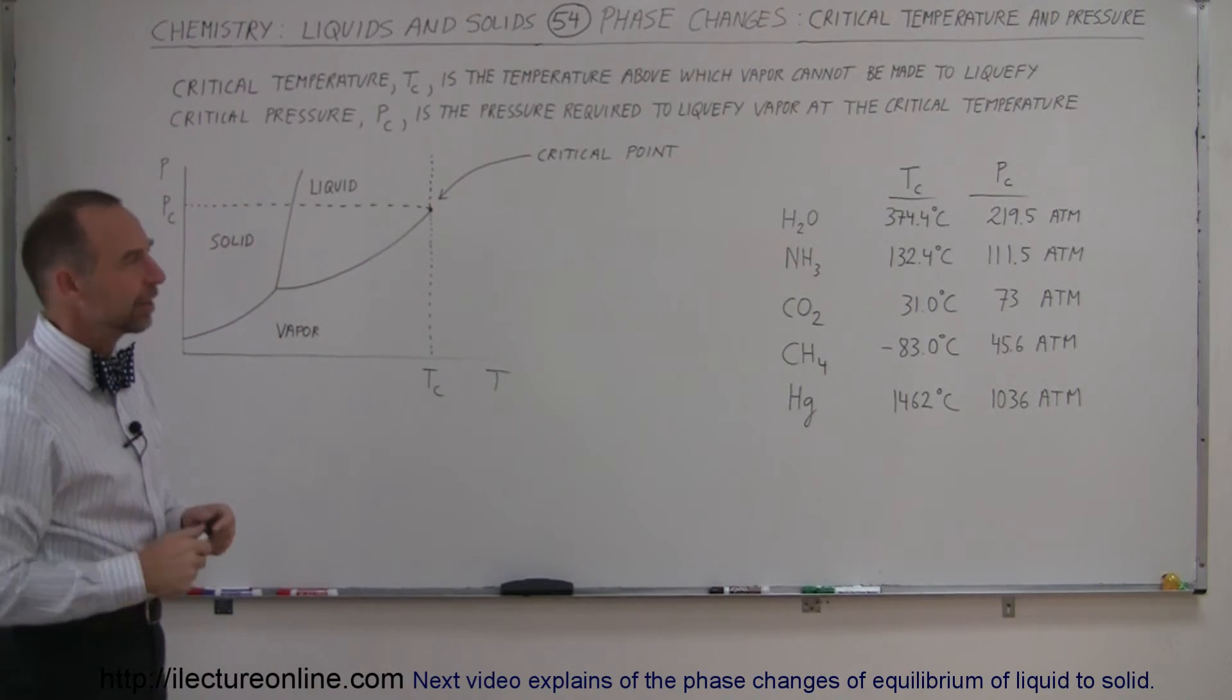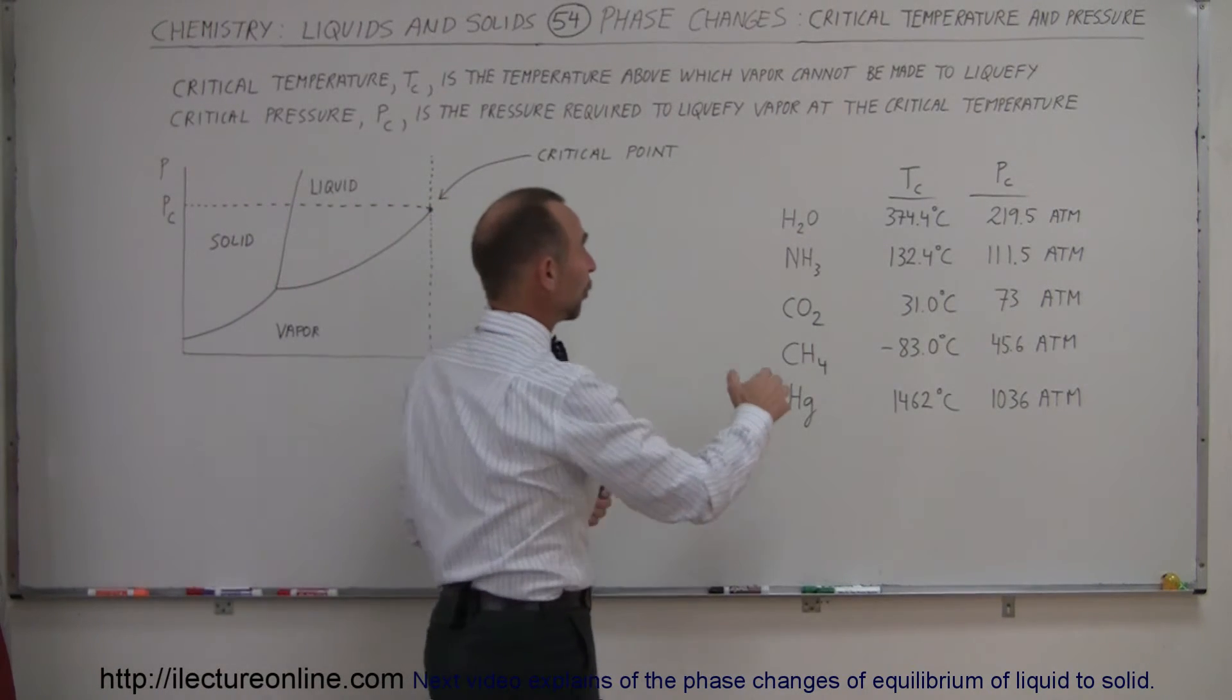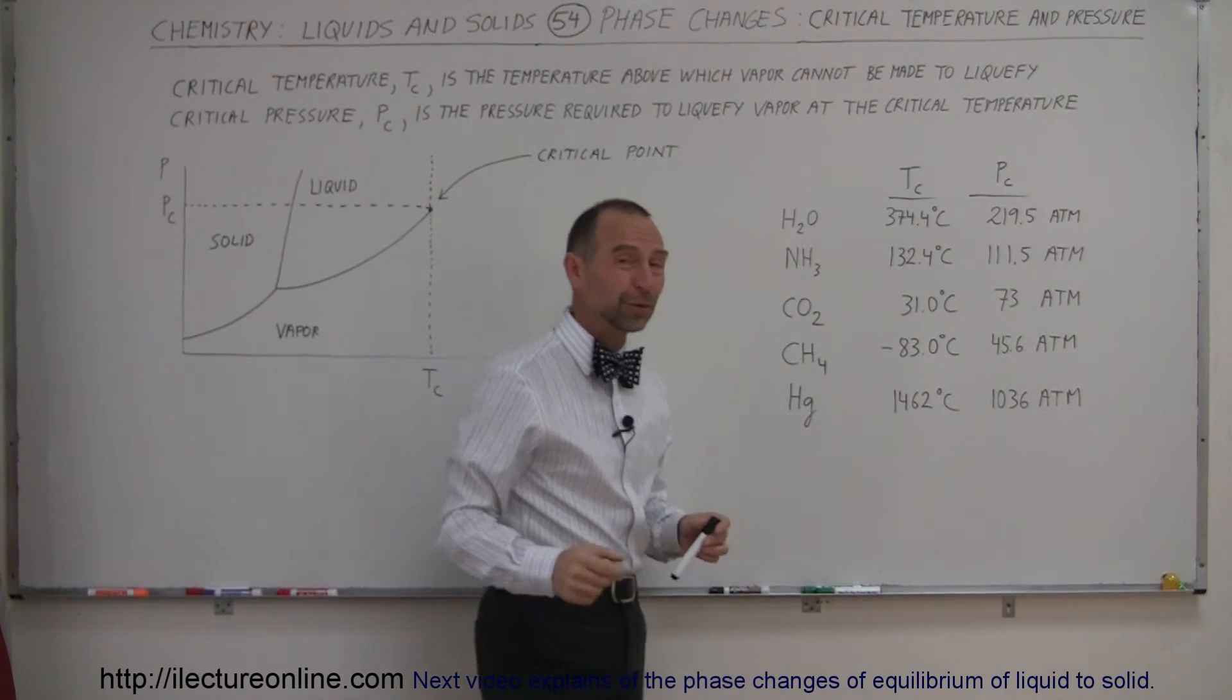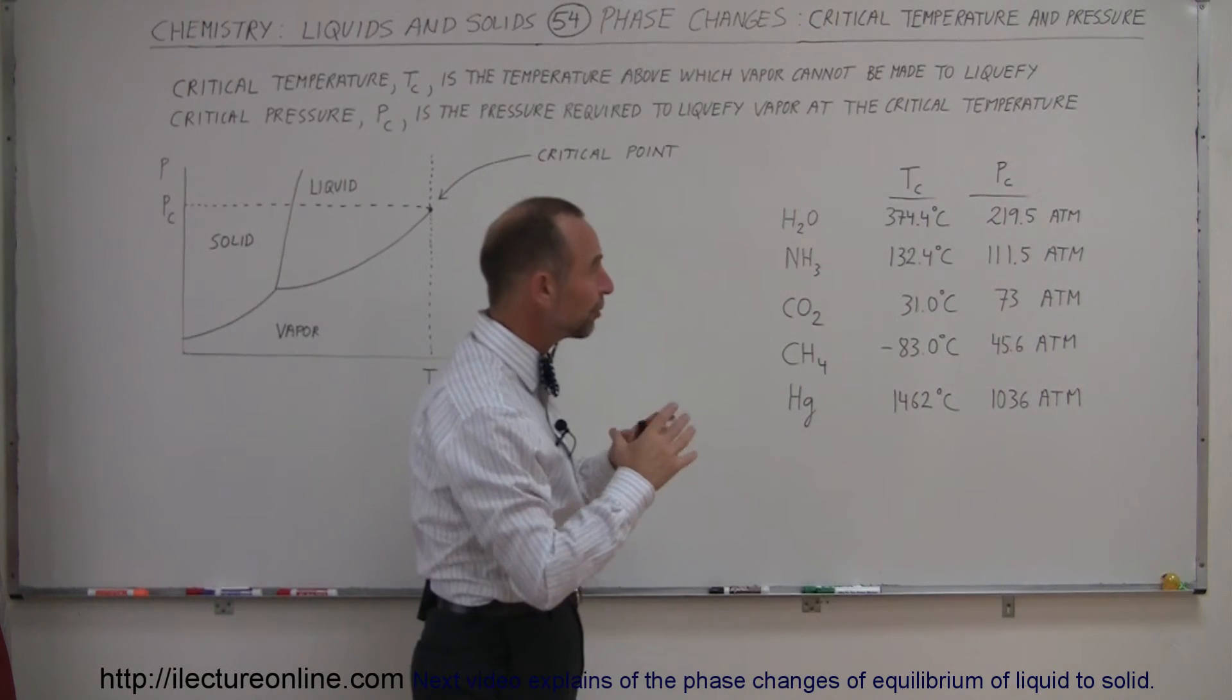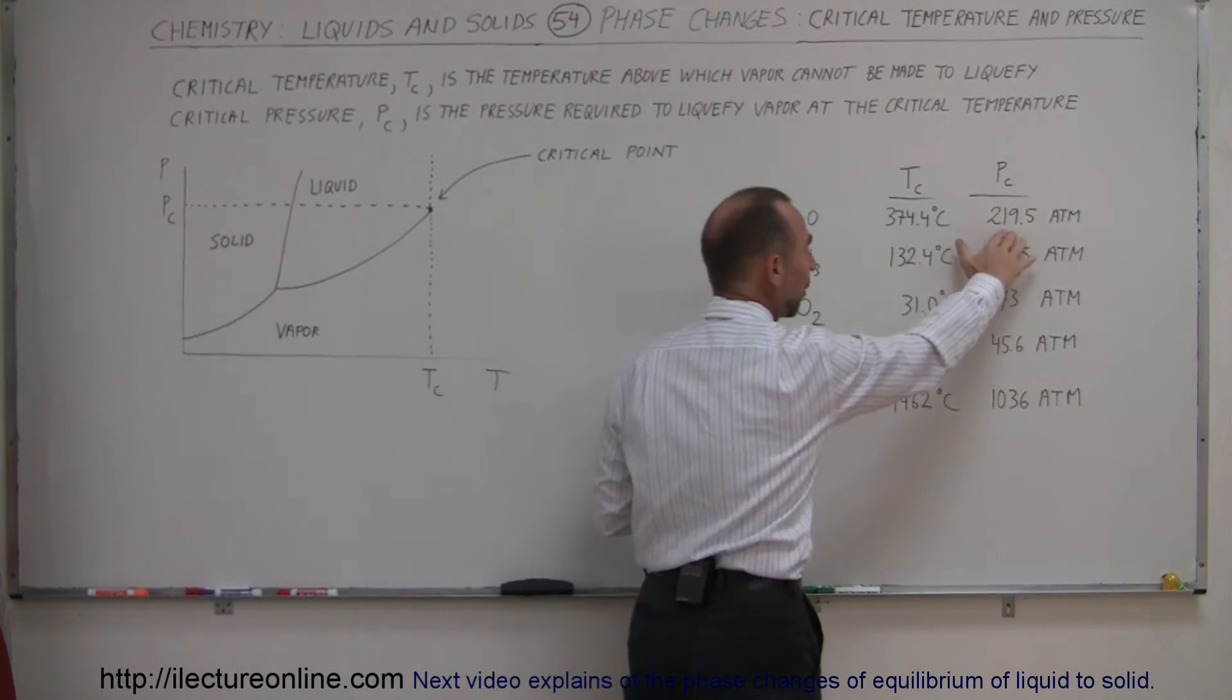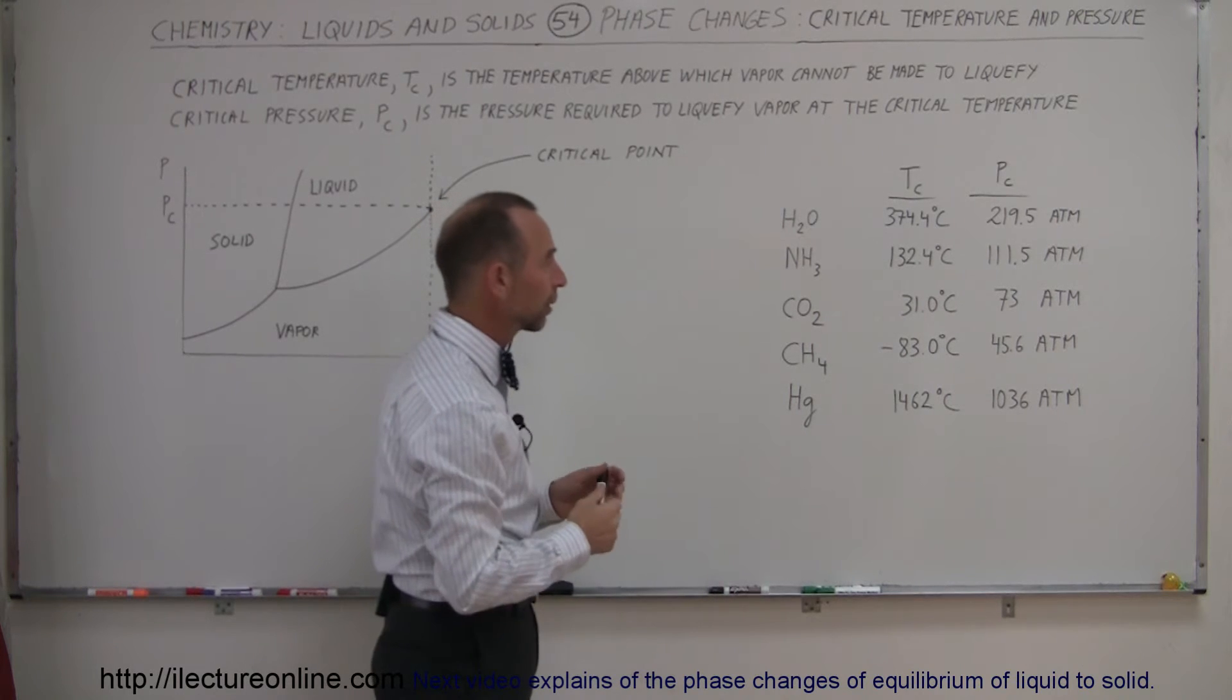To give us a feeling as to what some of these temperatures and pressures are, for water vapor, when you reach a temperature of 374.4 degrees centigrade, you will require 219.5 atmospheres of pressure. That's an enormous amount of pressure to turn vapor into a liquid. When the temperature exceeds that, that won't even do it. Regardless of the pressure, you cannot turn the vapor into a liquid.